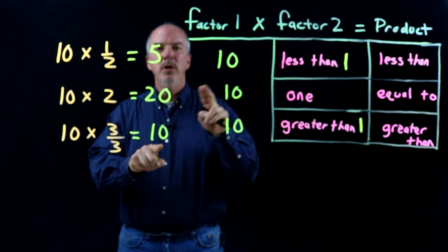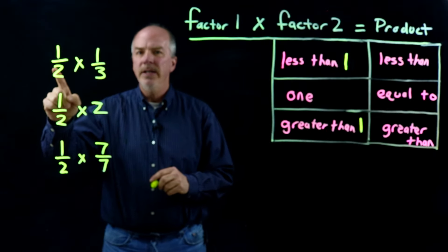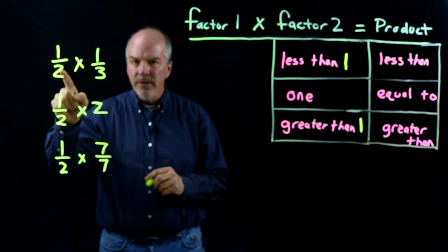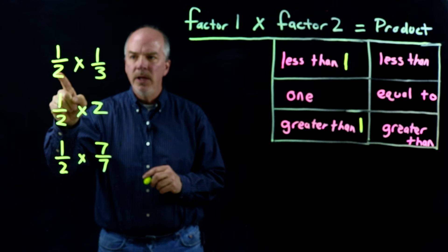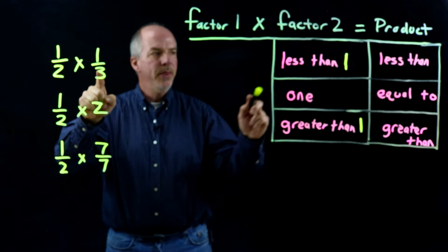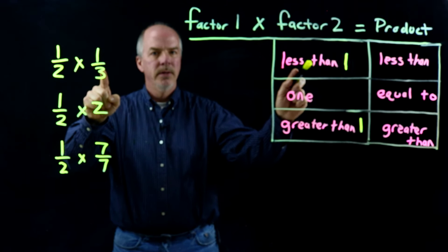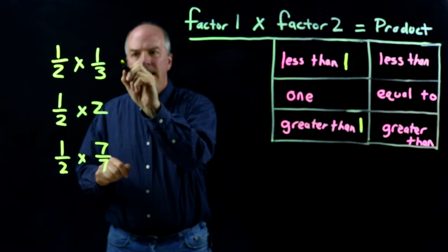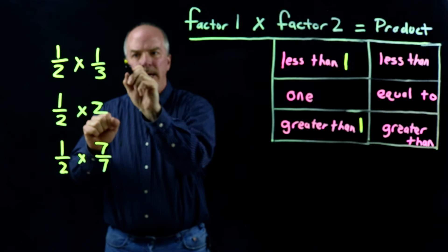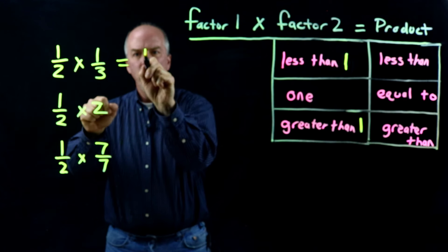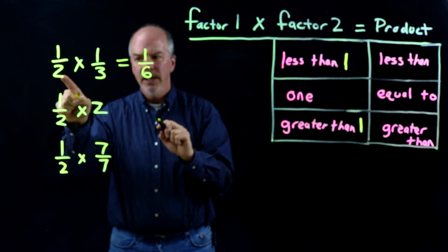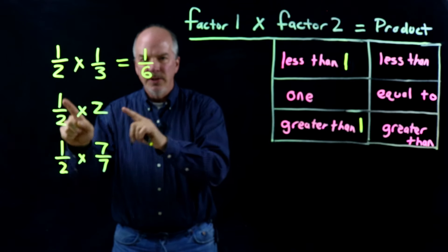Let's look at some more examples. Factor 1 is 1 half, times factor 2 is 1 third. What happens to my first factor — what happens to 1 half — when I multiply it times 1 third? Well, 1 third is less than 1, so my product is going to be less than what I started with. I can show you that would be 1 sixth, and 1 sixth is less than 1 half.